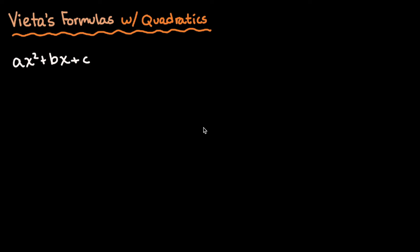Today we're going to be looking at how to use Vieta's formulas with quadratics. We're looking at quadratics because it's a simple polynomial — it has an x squared term, an x term, and a constant term. It's good to start with a simple polynomial so we can see the effects on quadratics and then generalize to higher degree polynomials.